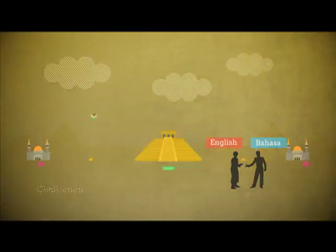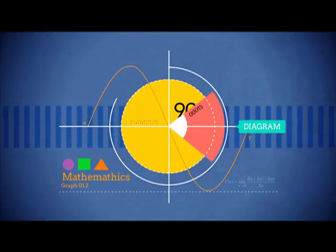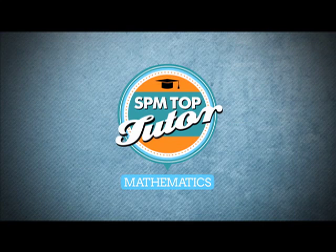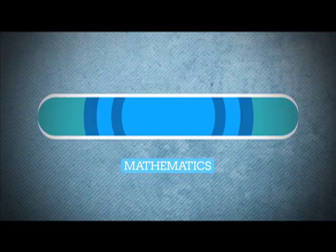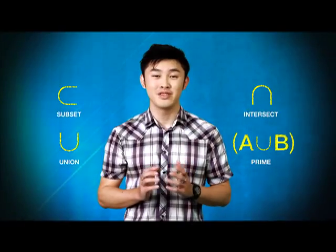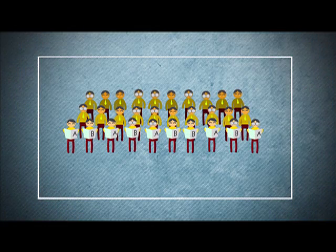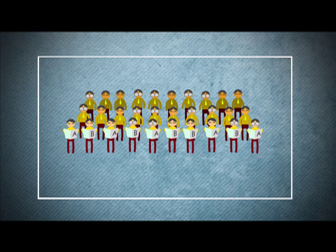And now, for some math. To understand sets, we have to understand the symbols used in sets. Look at this diagram. The universal set represents 30 students who are supposed to read newspapers. And it is represented by this funny-looking symbol.